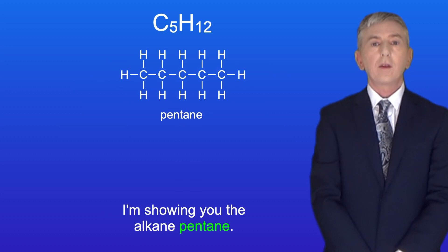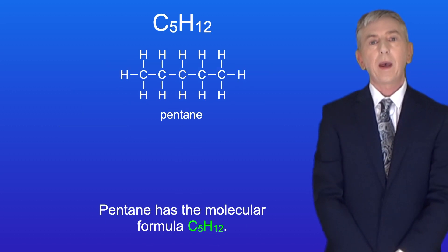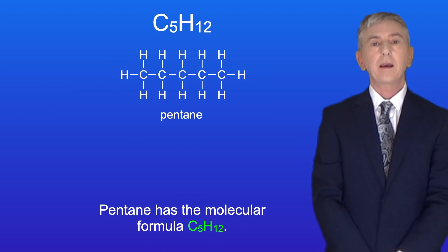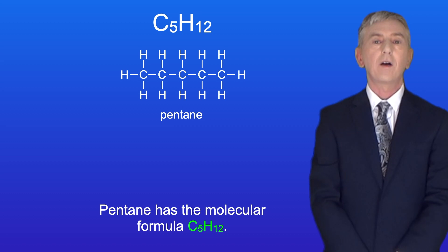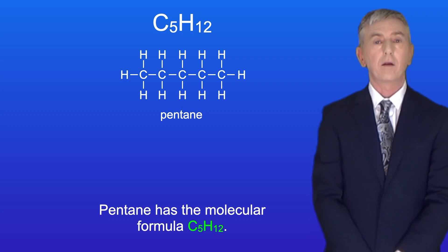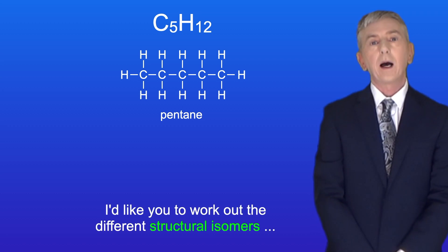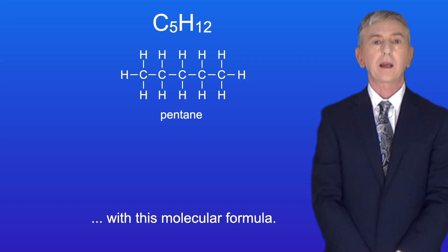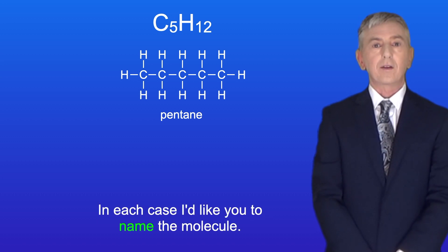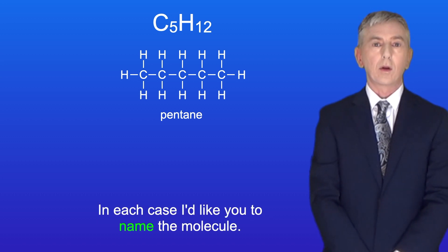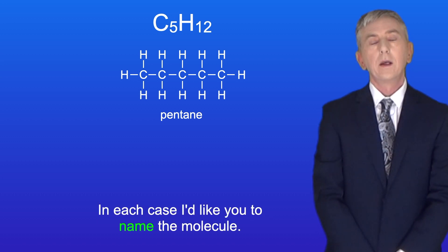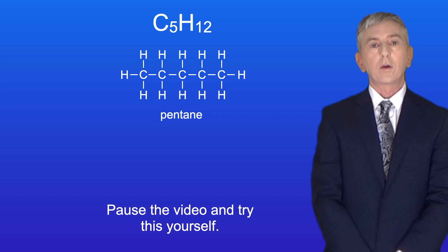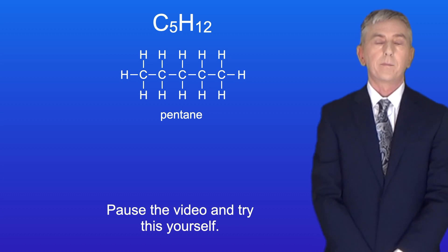Here is the alkane pentane, which has the molecular formula C5H12. I'd like you to work out the different structural isomers with this molecular formula and in each case name the molecule. Pause the video and try this yourself.